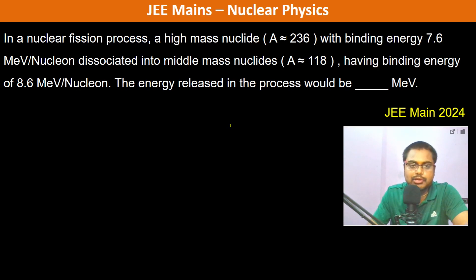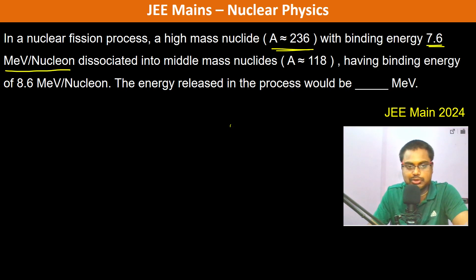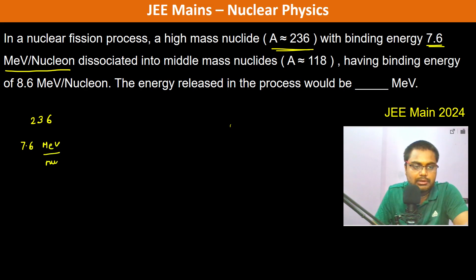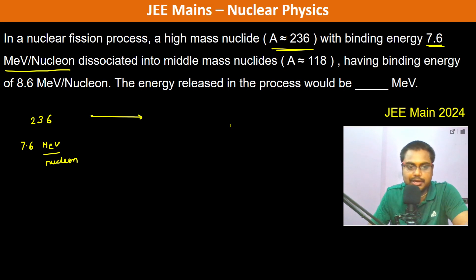In a nuclear fission process, a high-mass nuclide with mass number 236 and binding energy 7.6 MeV per nucleon dissociates into two middle-mass nuclides of mass number 118, each having a binding energy of 8.6 MeV per nucleon.